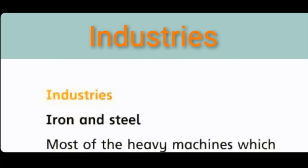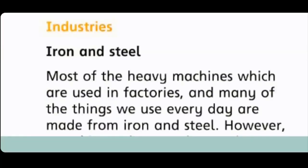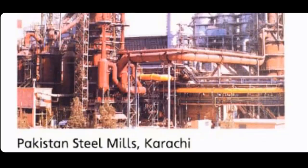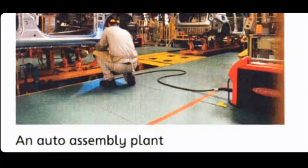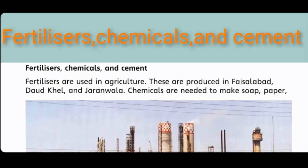Industries - Iron and Steel. Most of the heavy machines used in factories and many things we use everyday are made from iron and steel. زیادہ تر ہماری machines جو factories میں استعمال ہوتی ہیں اور بہت سی چیزیں جو ہم ہر روز استعمال کرتے ہیں وہ iron اور steel سے بنتی ہیں۔ Pakistan Steel Mills کراچی میں ہیں۔